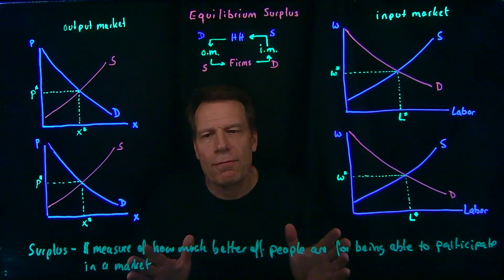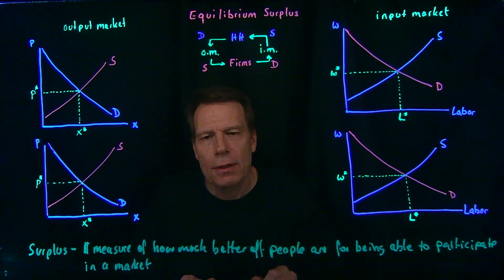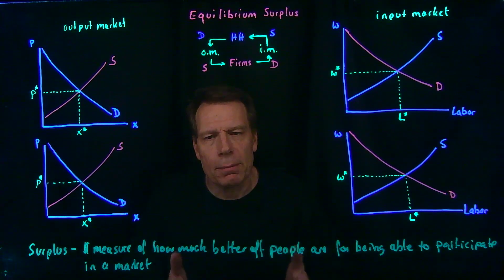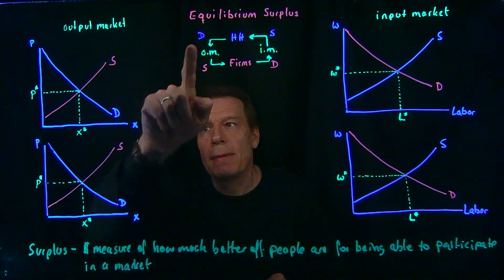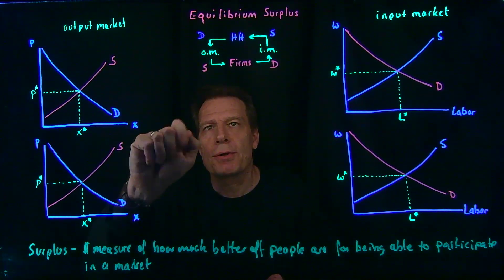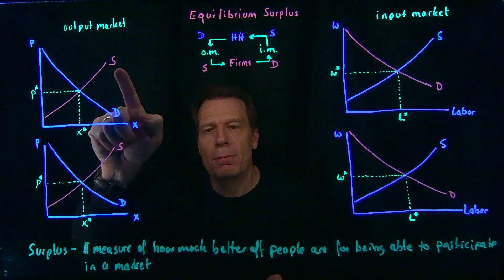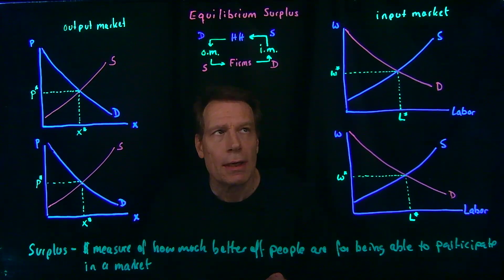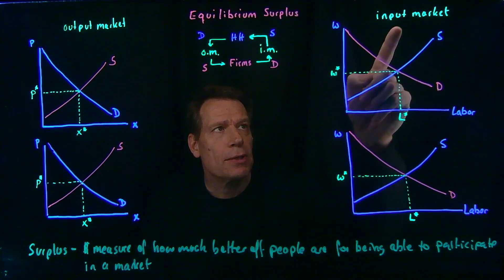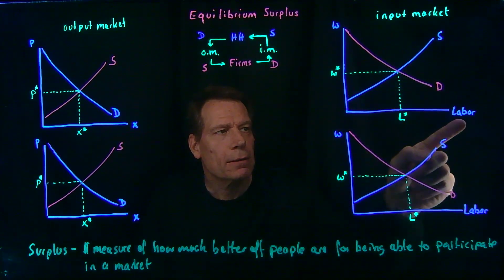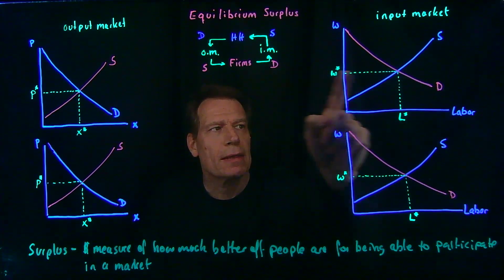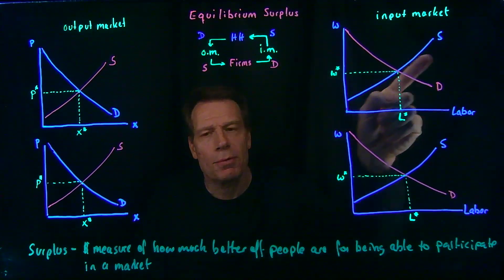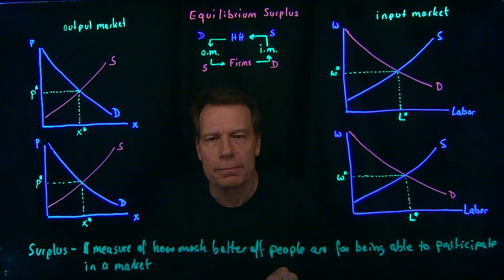Here we have four graphs of competitive market equilibrium. Two for the output market, where the demand comes from households and the supply comes from firms. And two for the input market of labor, where the demand comes from firms and the supply comes from households.